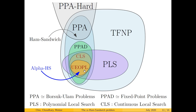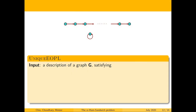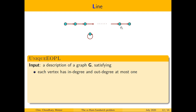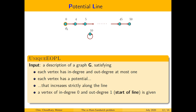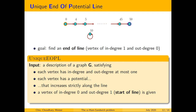What does UEOPL stand for? That becomes clearer when we look at the problem which defines this complexity class. As input we are given a graph G consisting of a path and perhaps some isolated vertices. More precisely, each vertex has in-degree and out-degree one, so it's called a line, and there is a potential associated with each vertex that increases strictly when walking along the line. We are also given a source vertex with in-degree zero — the start of a line — and naturally there must be a sink, a vertex with out-degree zero. The goal is to find this sink vertex, the end of a line, which is unique since there is only one path in the graph.